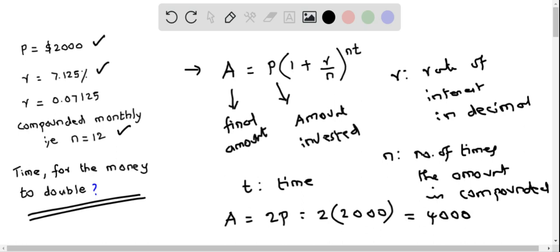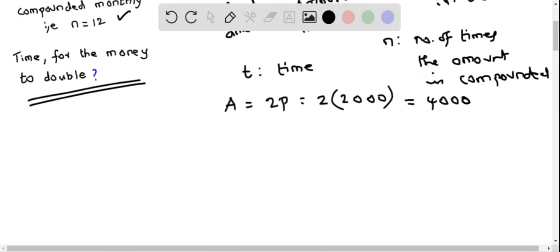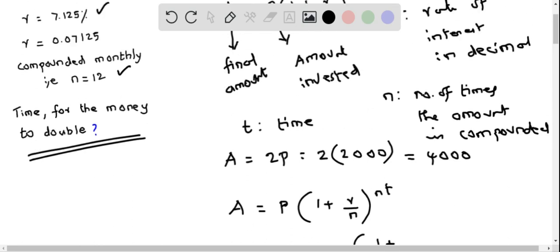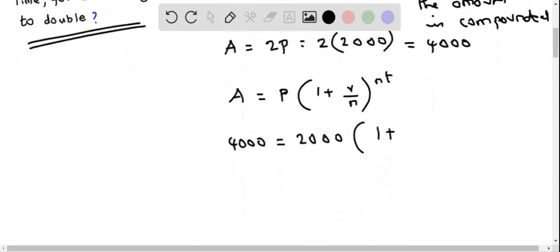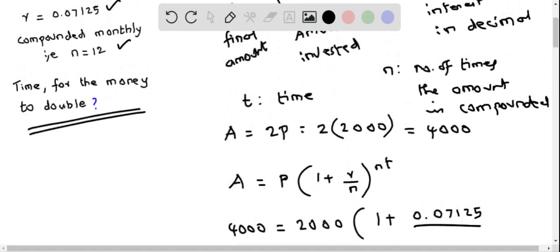Let's plug all values into the formula. A equals P times 1 plus r over n raised to the power of nt. Plugging in A = 4,000, P = 2,000, r = 0.07125, and n = 12, we get 4,000 = 2,000 times (1 + 0.07125/12)^(12t).